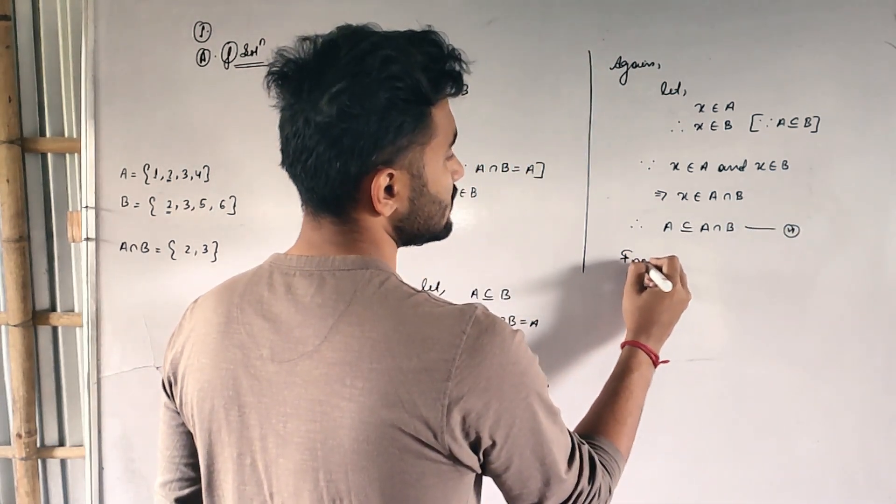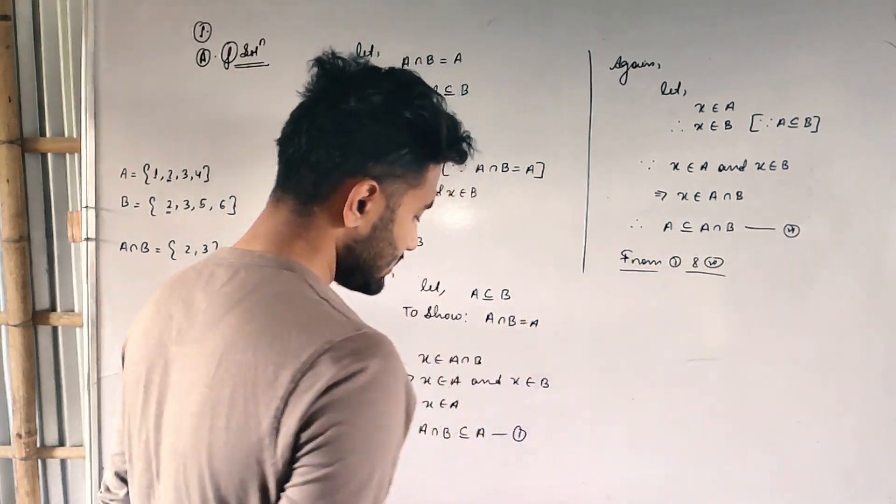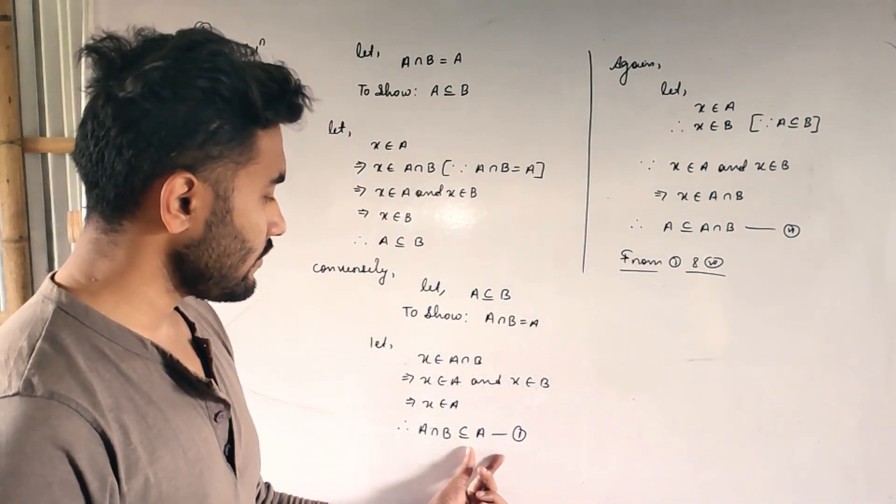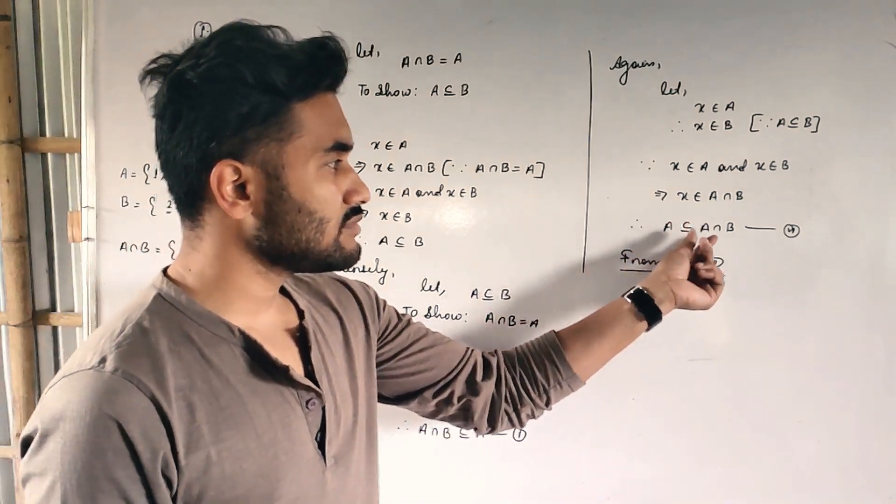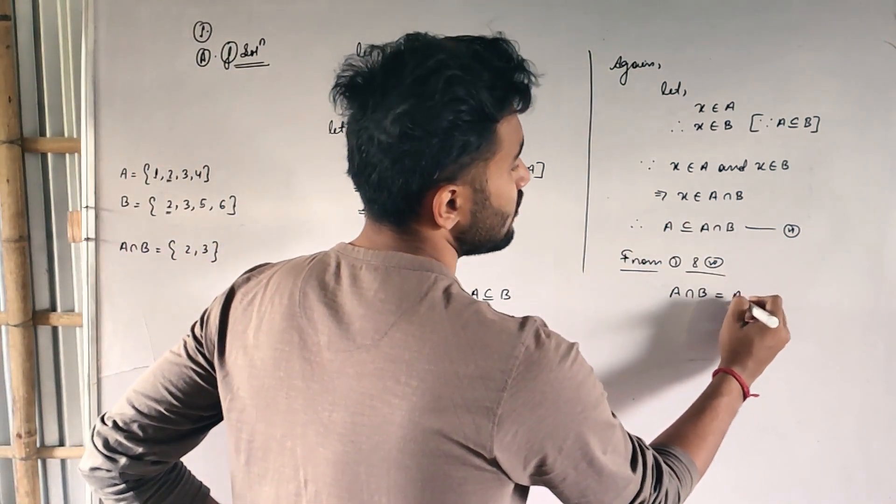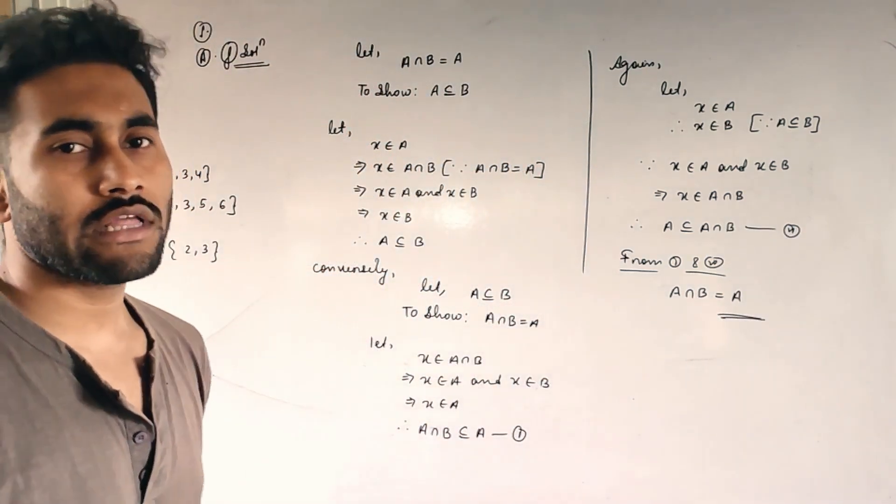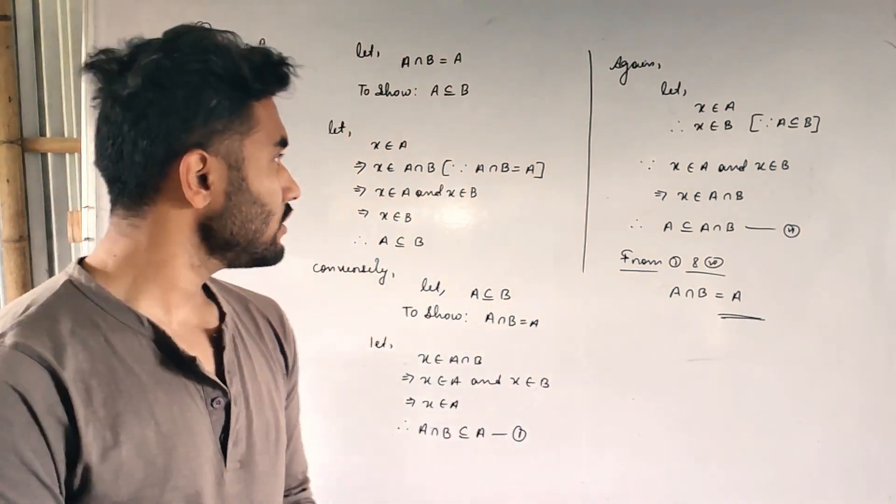So therefore A is a subset of A intersection B and this is equation 2. So from 1 and 2, the math is completed. From 1 and 2, what I can say? A intersection B is a subset of A and the opposite one, A is a subset of A intersection B. So in that situation what will happen? A intersection B will be equal to A and we have solved all the if and only if type question, okay.